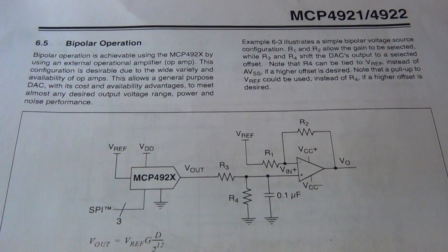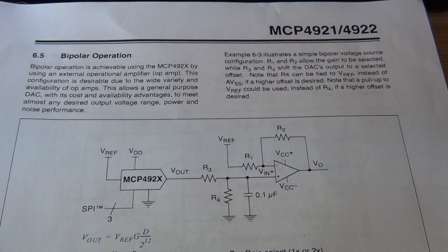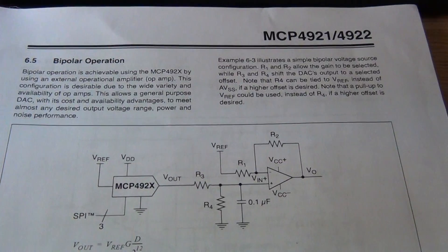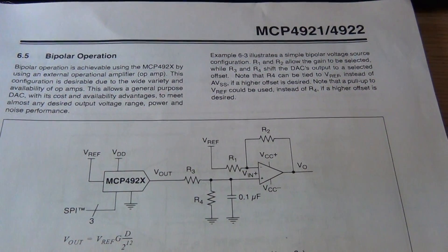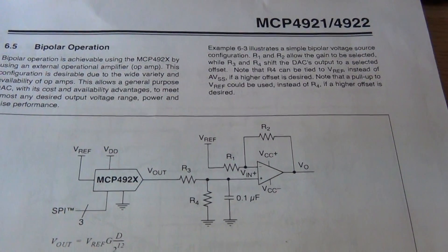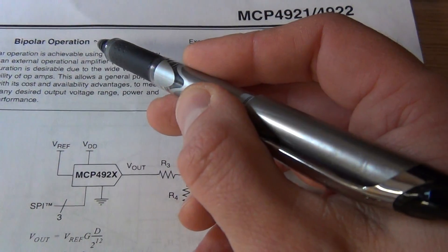But before that we need to do some calculations for the resistors for the output of the MCP4922 and the gain control of the amplifier. For this we will use this page for MCP4922 bipolar operation.